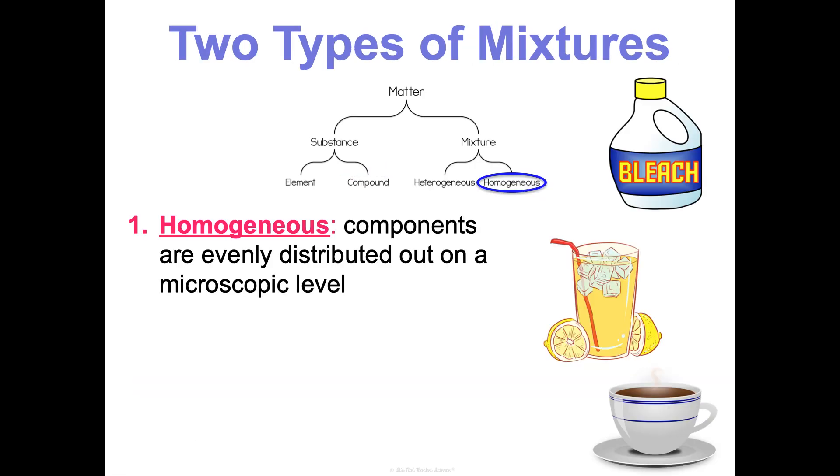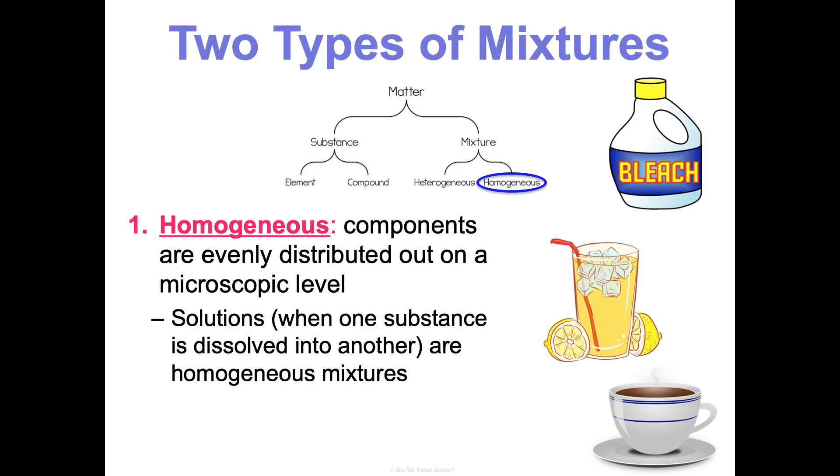Now, mixtures are different. A homogeneous mixture, the components are going to be evenly distributed out on a microscopic level. So I find homogeneous mixtures to be the trickiest. Solutions are homogeneous mixtures. That's when we dissolve one substance into another. But they often appear blended, and that's what can kind of make them tricky to identify. Bleach, lemonade, coffee, these are all homogeneous mixtures. They're mixtures because they're physically combined together, not chemically combined like a compound is.